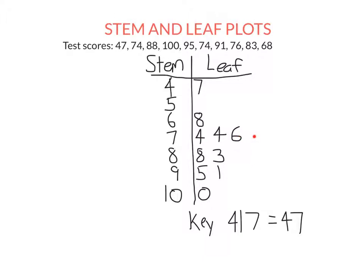So the 70s row is right, but the 80s is incorrect. I need to switch this around. So I have the smallest one, which is 83. That's the smallest score in the 80s. First, then 88.